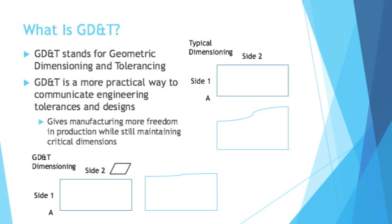Is side 2 going to be straight the whole length of the rectangle? Well, technically, with a tolerance like that, it could be wavy, like the image below. It could be anywhere between 2.75 and 3.25, and it would technically still meet the specifications of the drawing.